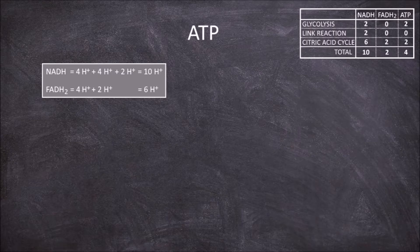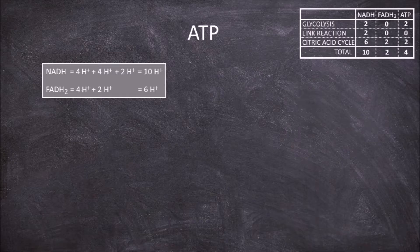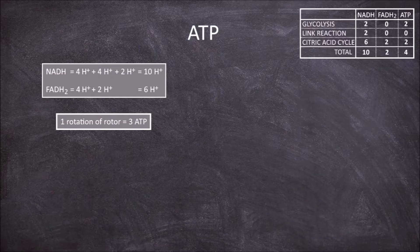This number varies and relates to the number of subunits on the rotor. In each rotation of the rotor on the ATP synthase, 3 ATP are made in the catalytic knob. The amount of hydrogen needed to produce a molecule of ATP depends on the number of subunits on the rotor.